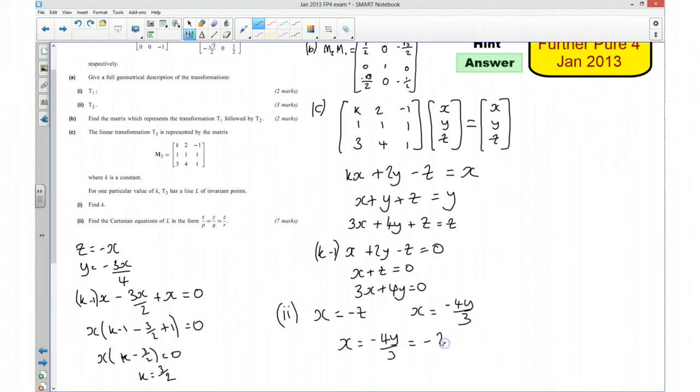And that's going to be equal to negative z. So we're almost in this form now. What I want to do is multiply everything by 4. So that will give me x over 4 equals y over negative 3, which is going to be equal to z over negative 4. And there you go. We've now got it in this form where p is 4, q is negative 3, and r is negative 4.